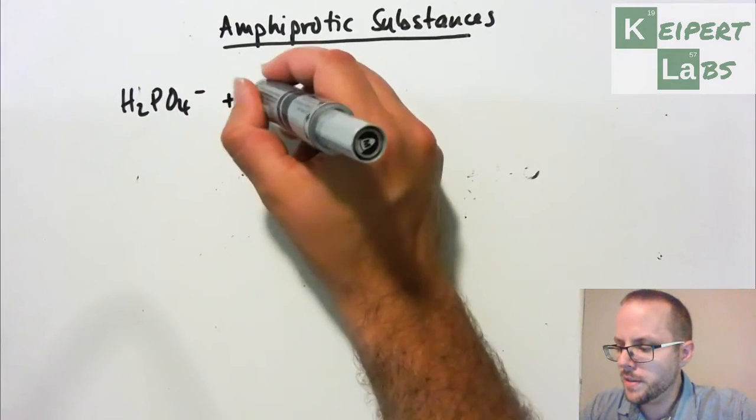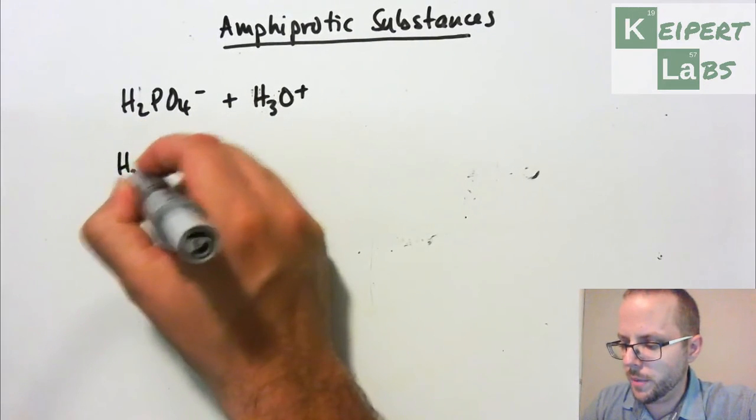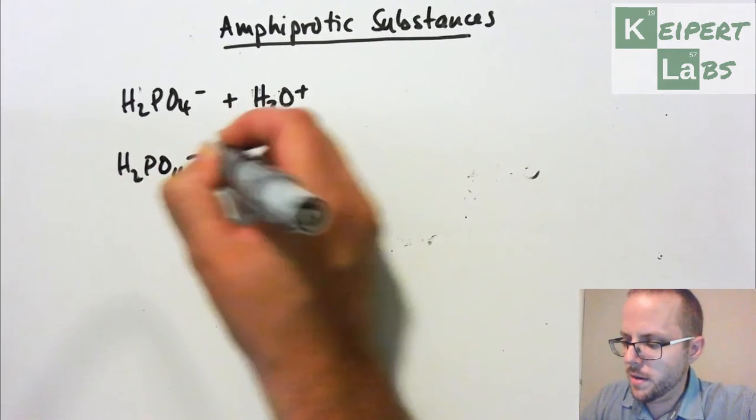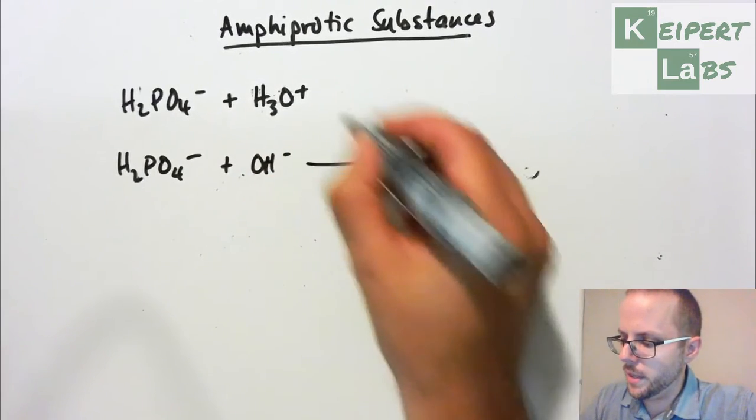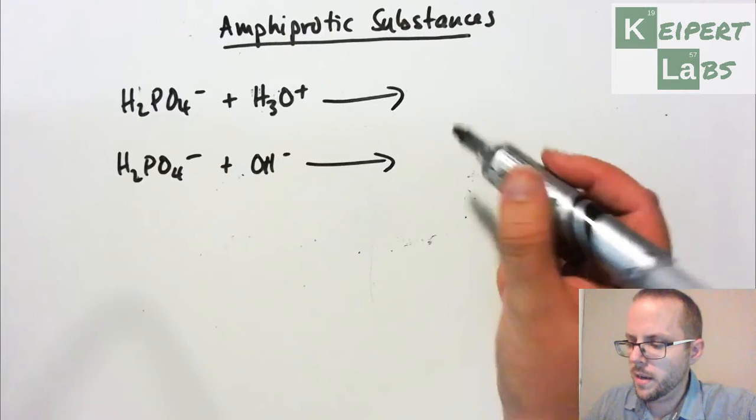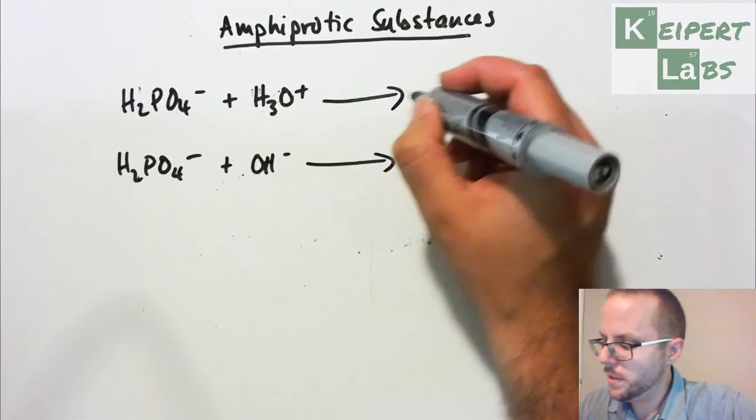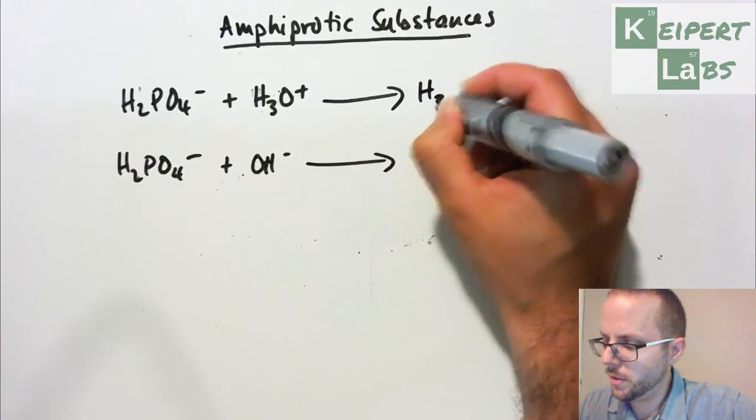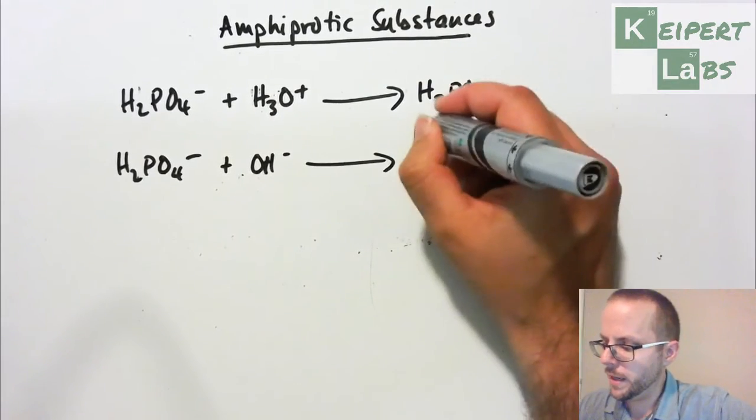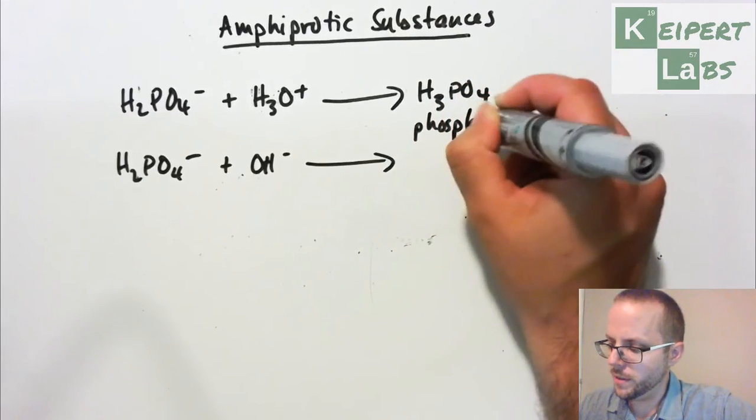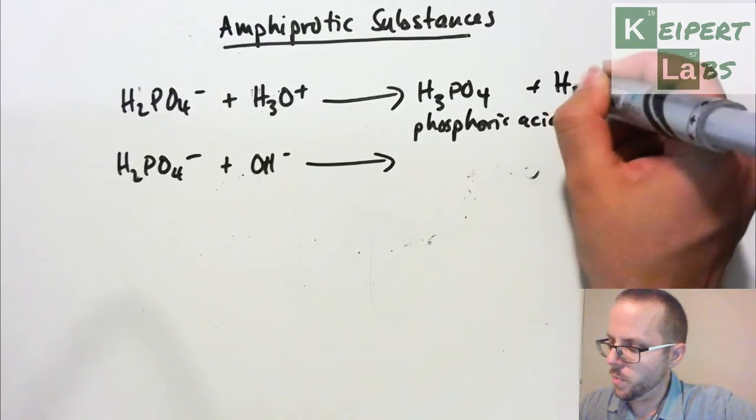We can treat this the same way. We can say, all right, well imagine if we react it with acid and imagine if we react it with base and see what we see. So we know that hydronium's got one extra proton that it's going to donate. So we're going to go from H2 to H3 and we're going to go from 1- to neutral. This is phosphoric acid, which hopefully that rings a bell. And we've made water as well.